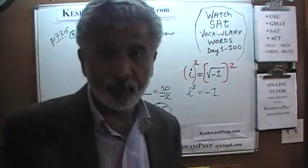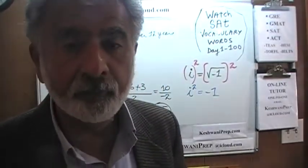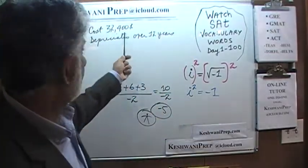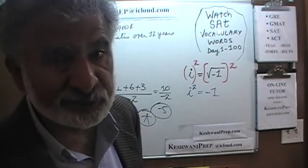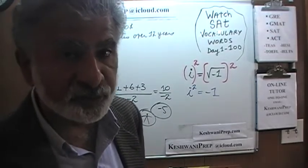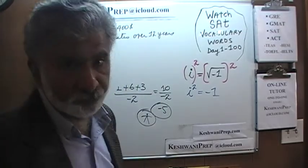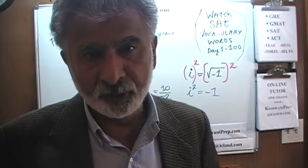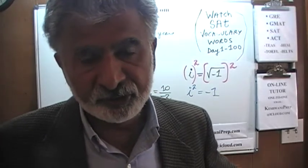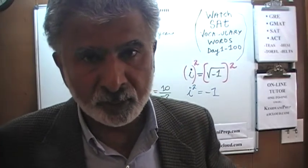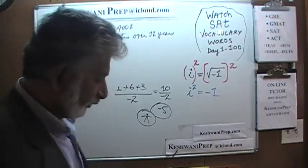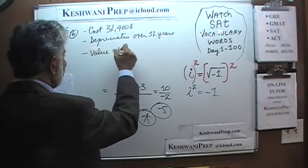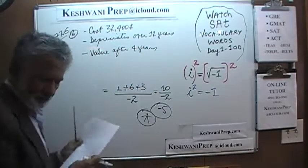Let's go on to problem number 6. We have some kind of machine — a camera, I believe — which was bought for $32,400. We are told it depreciates at a constant rate over 12 years, and at the end of 12 years it has no value. Every year it goes down in value by 1/12 of that amount. The question simply is: what is the value after 4 years?